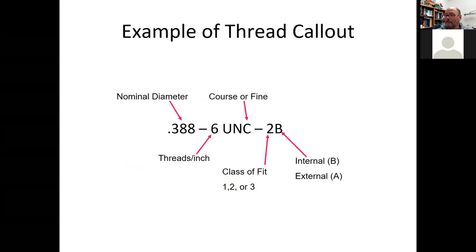Here's an example: 0.388-inch nominal diameter, 6 threads per inch, Unified National Coarse, class 2B — meaning class 2 fit and internal thread.